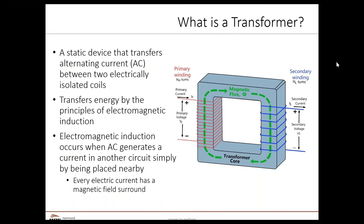I'd like to begin with the definition of a transformer. In simple words, it's a static device that transfers electrical energy from one circuit to another through the process of electromagnetic induction, which basically utilizes magnetic fields to produce voltage and, in a closed circuit, a current. Mutual induction between two or more windings, also known as coils, allows electrical energy to be transferred between circuits. A transformer typically consists of a magnetic circuit, which is the core, and an electric circuit, which consists of primary and secondary winding.